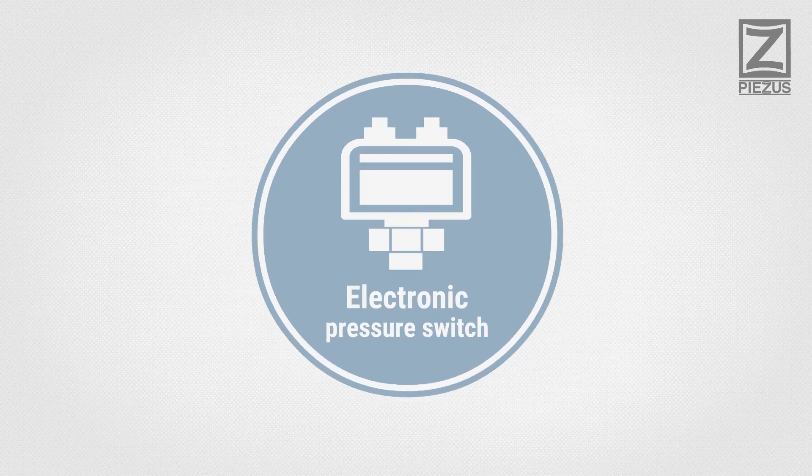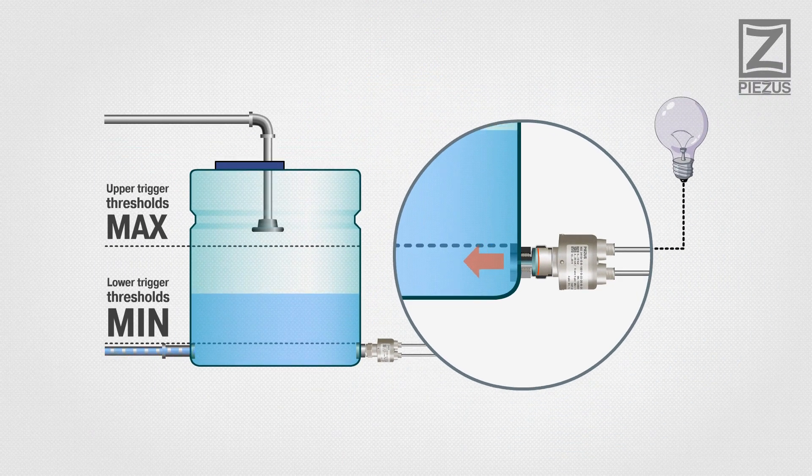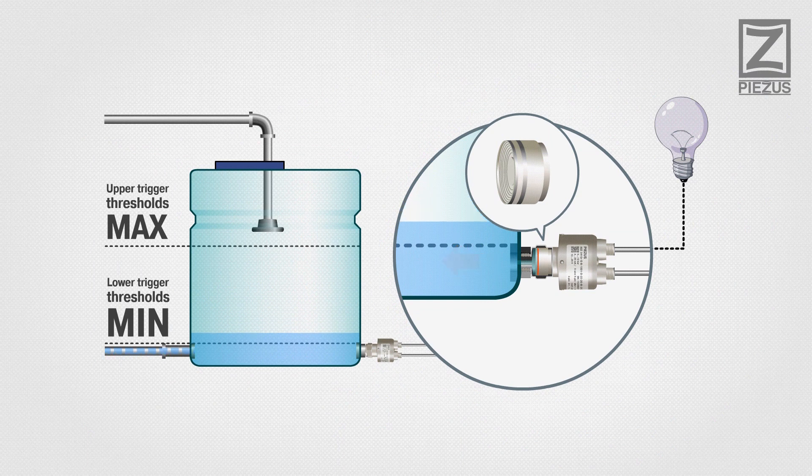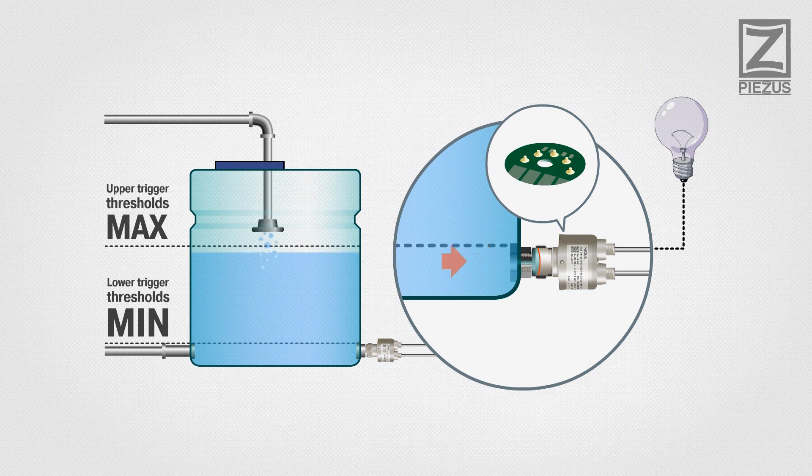Electronic Pressure Switch. An electronic pressure switch is based on a pressure sensor element, electronic board that ensures precise switching thresholds, and a virtually wear-free solid-state relay to switch the load.